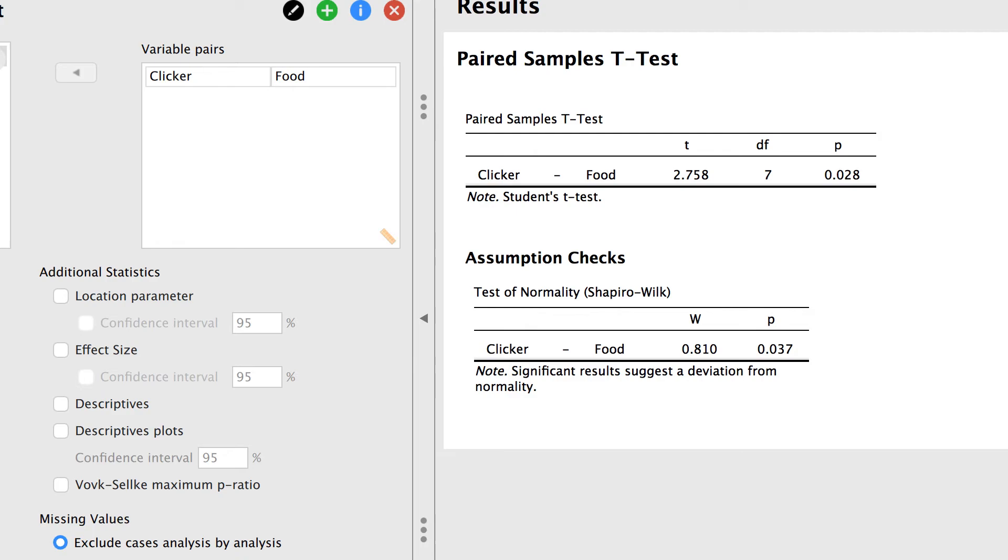Here we notice that we may have a problem. The assumptions check says that these results suggest a deviation from normality. The probability is less than 0.05. What should we do?